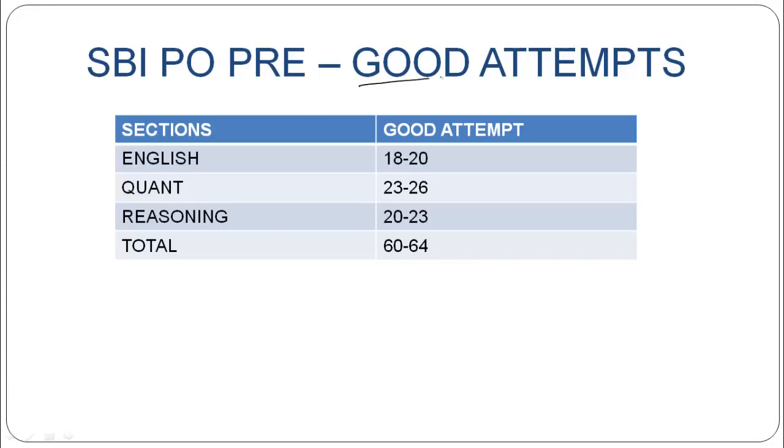First of all, we should know what were the good attempts. For English, good attempts varied between 18 to 20. For quant, it varied between 23 to 26. For reasoning, it varied between 20 to 23. And on total, it varied between 60 to 64.